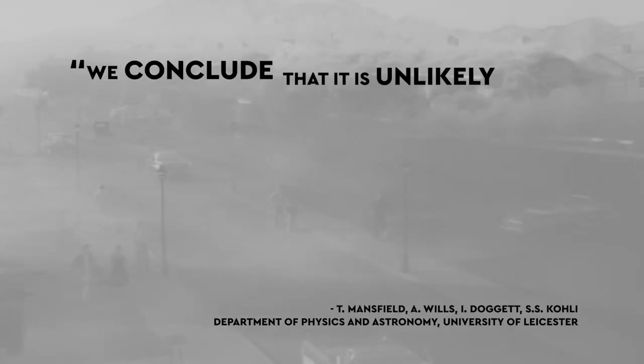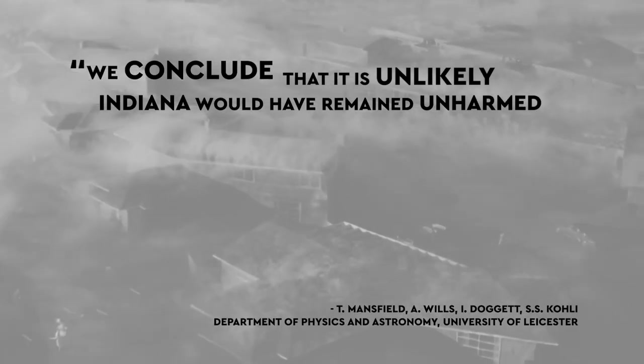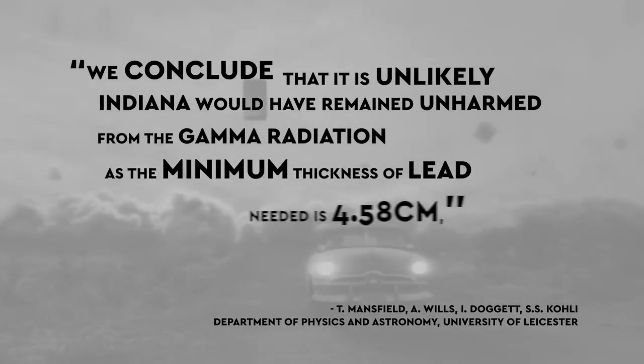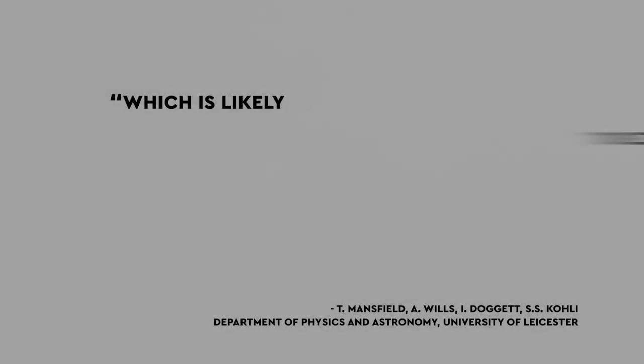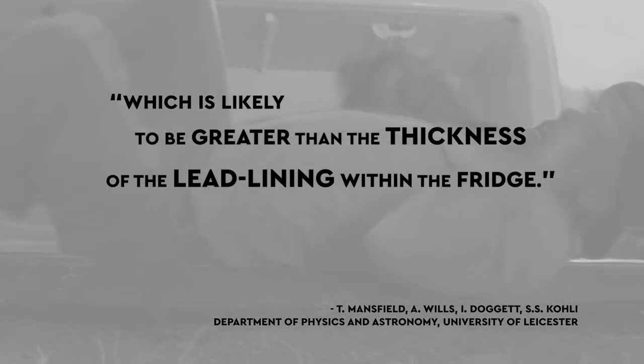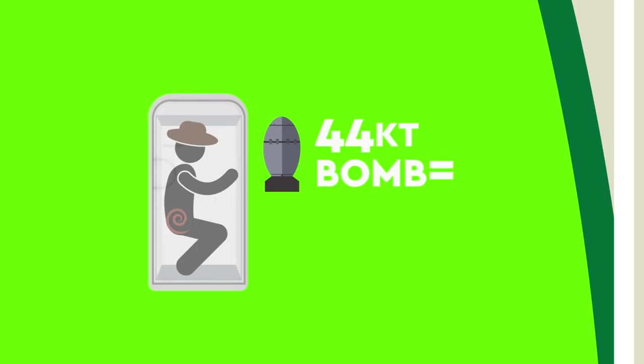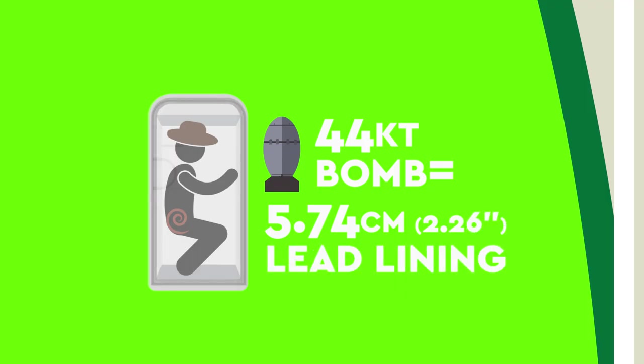calculated that the lead lining would have been too thin to protect him. We conclude that it is unlikely Indiana would have remained unharmed from the gamma radiation as the minimum thickness of lead needed is 4.58 centimeters, which is likely to be greater than the thickness of the lead lining within the fridge. To make matters worse for Indy, a nuclear bomb the size of Smokey would actually require 5.74 centimeters of lead to provide a safe level of shielding.